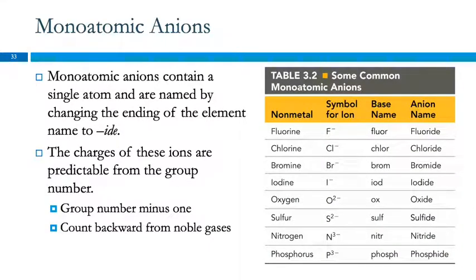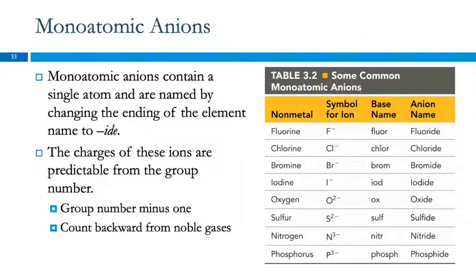For anions, nonmetals are like the feminine side of the analogy: traditionally when a woman got married she changed her last name. So when a nonmetal becomes an ion, it changes the ending of its name. Fluorine becomes fluoride, chlorine becomes chloride. We don't need Roman numerals for anions because their charges are predictable from the periodic table.